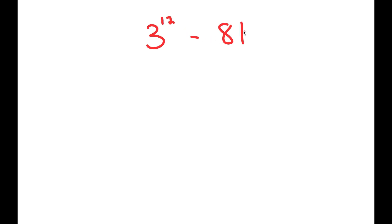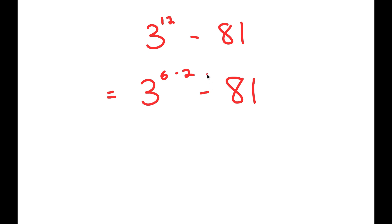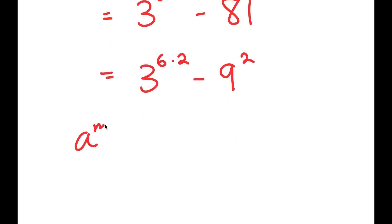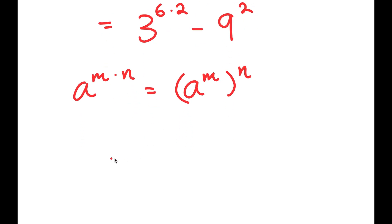In this video, I'm going to solve the problem 3 to the power of 12 minus 81. To solve this, I'm going to first rewrite this as 3 to the power of 6 times 2 minus 81. Using the property that a to the power of m times n equals a to the power of m to the power of n, 3 to the power of 6 times 2 turns into 3 to the power of 6 to the power of 2.